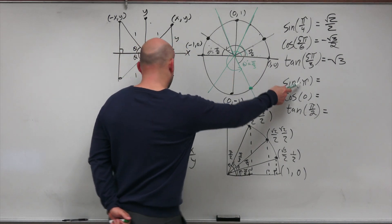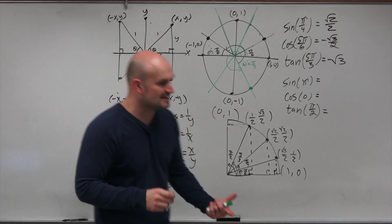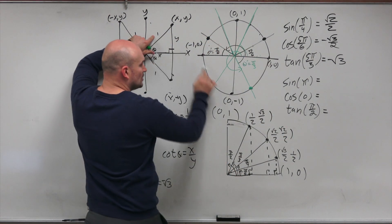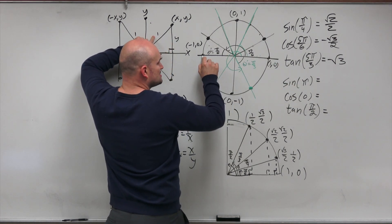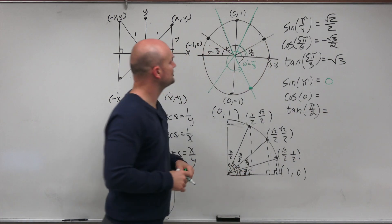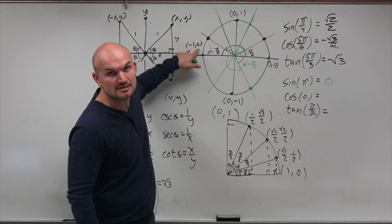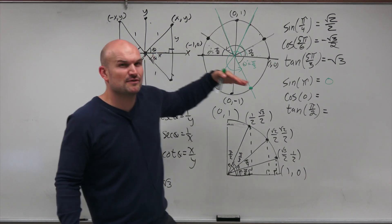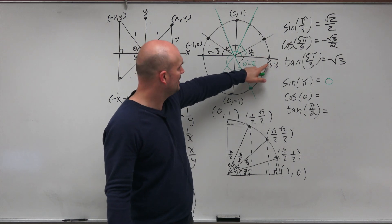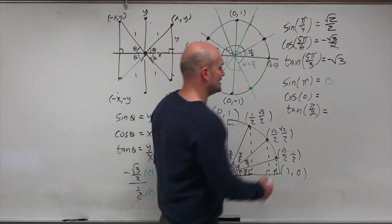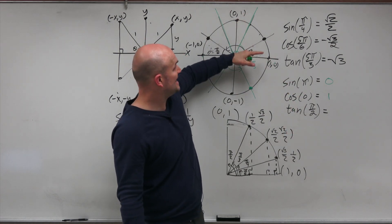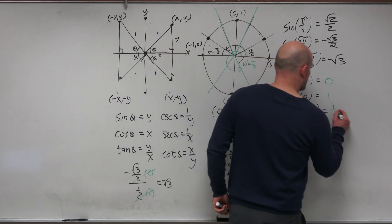For the sine of pi: pi is 180 degrees — you can't create a triangle with a 180-degree interior angle. But using the unit circle, we look at the y-coordinate at that point, which is 0. For the cosine of 0: going to angle 0, we look at the x-coordinate, which equals 1. And for the tangent of pi over 2 — which is 90 degrees — tangent is y over x, which is 1 over 0, and that is undefined.